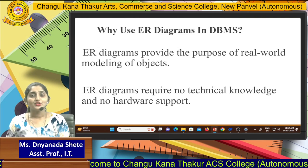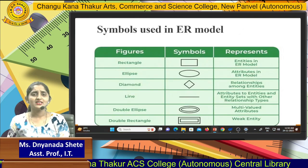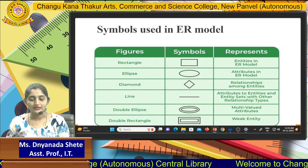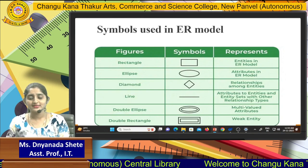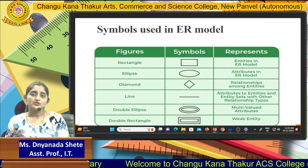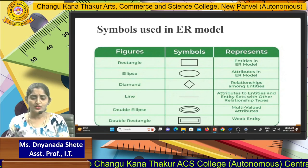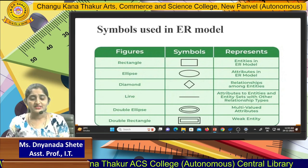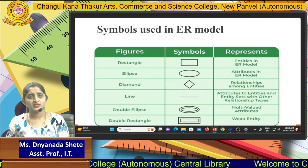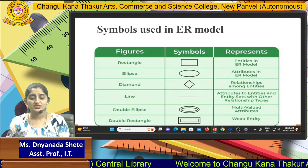There are some symbols used in your ER model. The first symbol is a rectangle — rectangle means entity. When you take a shape of rectangle, it will always be used for the entity. The next shape is the ellipse — ellipse means attributes. When you take any attributes for the diagram, it will use the ellipse.